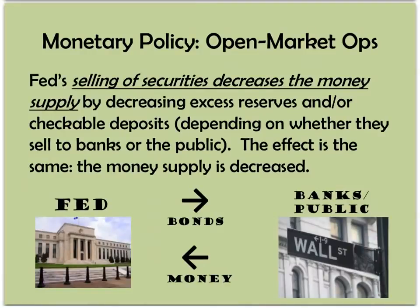Conversely, when the Fed wants to contract the money supply — to suck money out, if perhaps there's too much and inflation is on the rise — it will sell bonds. When it sells bonds to banks and the public, they have to pay for them, and the Fed has an inflow of money out of the economy. The Fed makes the price attractive, and they will sell the bonds and extract the money from the economy.